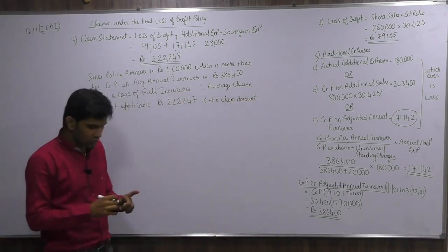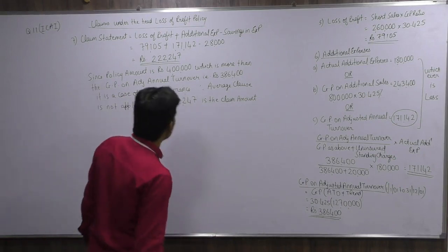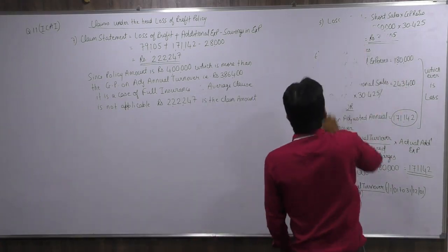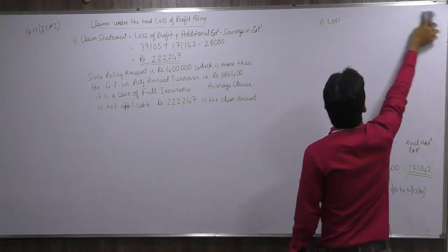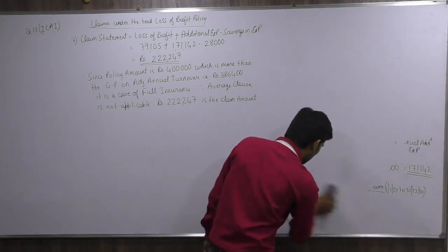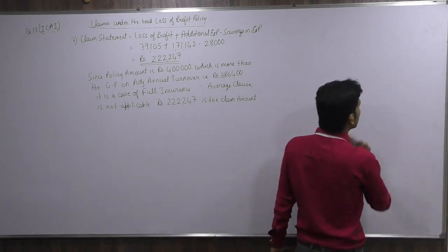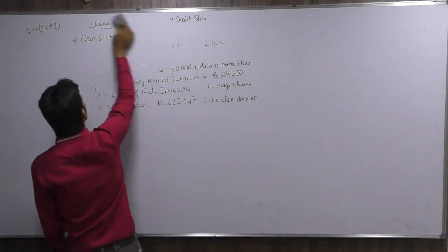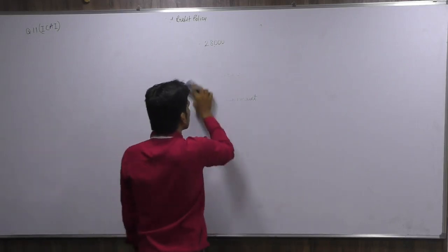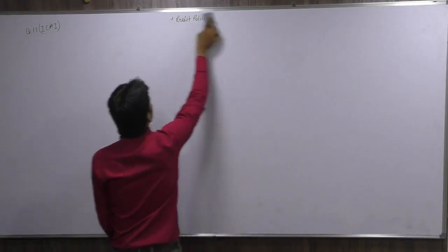That's it — we have completed the ICI module, both questions. The key important point is the GP ratio change: it changed because the GP ratio formula includes uninsured standing charges, so it had to be adjusted. Also, all figures were trend-adjusted — STO and ATO — so those were important points to consider. You can refer to this and raise any doubts. This was sum number 11 of the ICI module. Thank you very much.